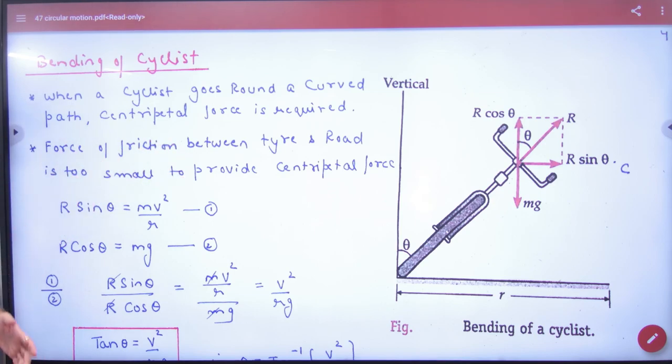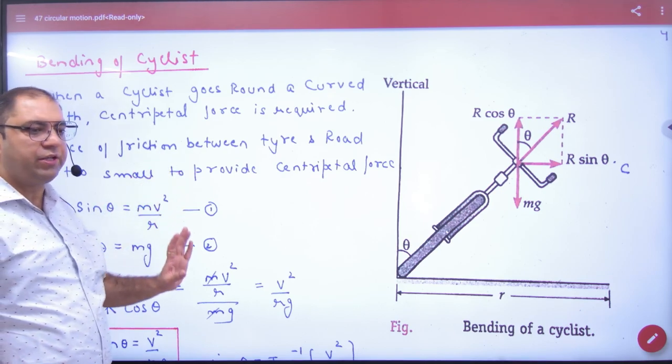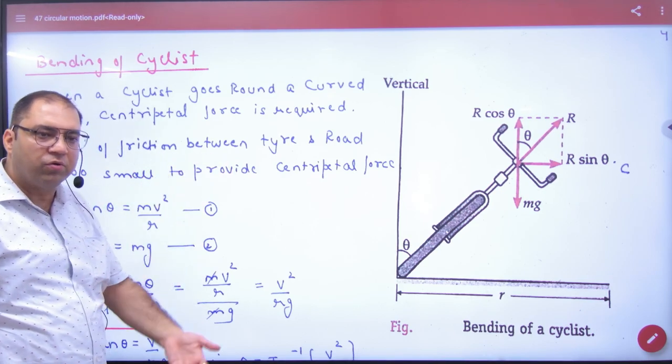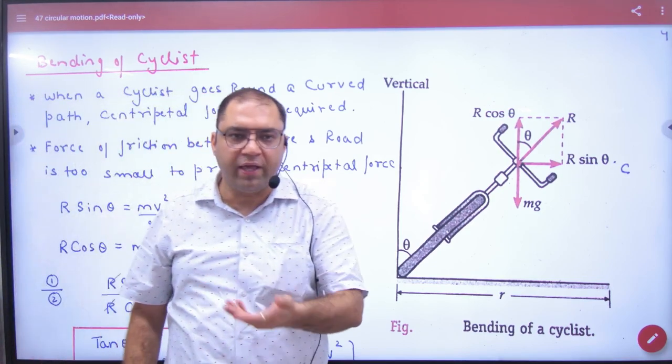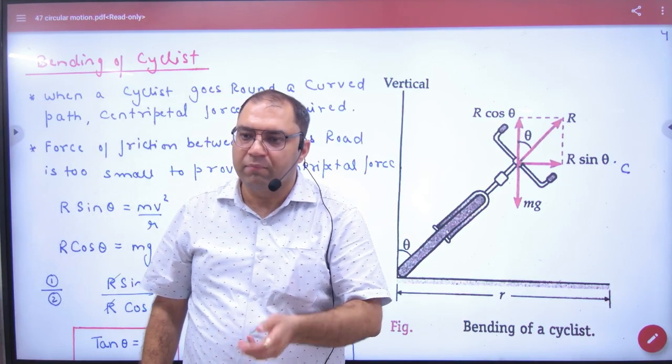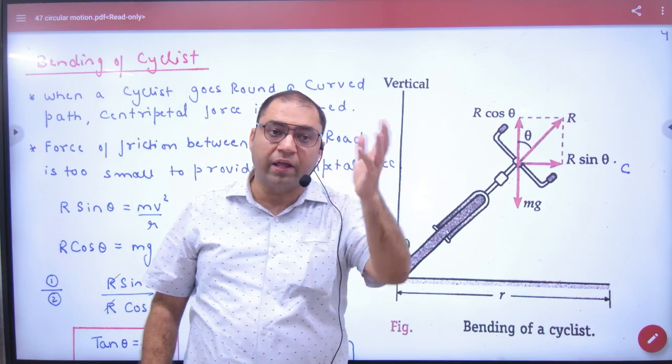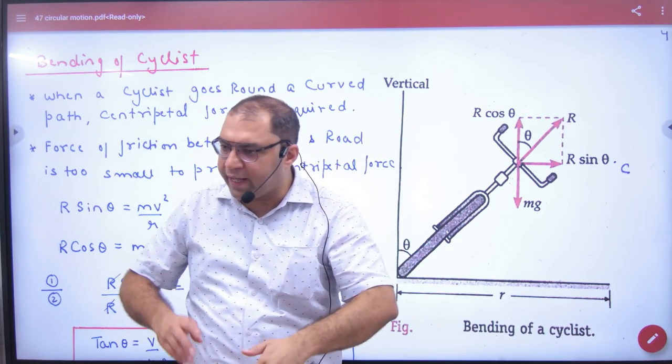The weight of the cyclist isn't much, so the normal reaction isn't much. When going fast, the normal reaction is low and friction is insufficient. The friction alone isn't enough for the tire to provide the necessary centripetal force.